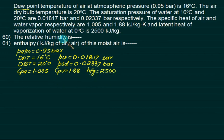First of all, we want to calculate phi. Phi is given by PV divided by PSD. PV is 0.01817 and PSD is 0.02337. The approximate answer is 77%.